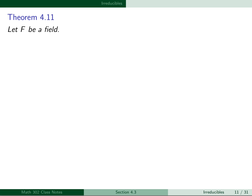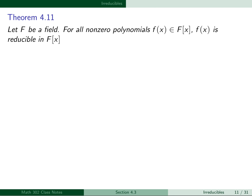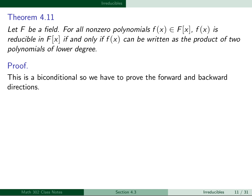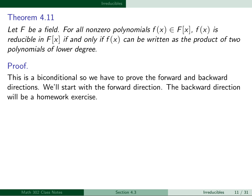For our first theorem, let F be a field. For all non-zero polynomials f(x) in F[x], f(x) is reducible in F[x] if and only if f(x) can be written as the product of two polynomials of lower degree. So a polynomial is reducible if you can factor it non-trivially—as a product of two polynomials where neither has the same degree as f(x). This is a biconditional; we must prove both directions. We'll prove the forward direction here; the backward direction is a homework exercise.